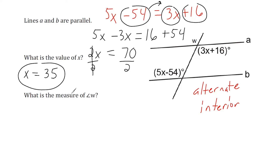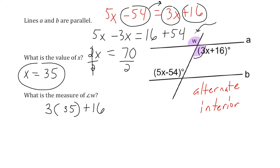Now we have to use this to figure out the measure of angle w, which is right here. Angle w is vertical to this angle, so they have the same angle measure. We take the expression 3x plus 16 and substitute x with 35: 3 times 35 plus 16. That's 105 plus 16, which equals 121 degrees. So the measure of angle w is 121 degrees.